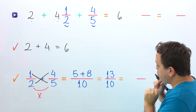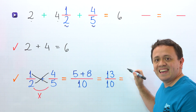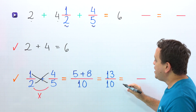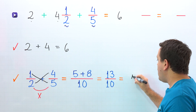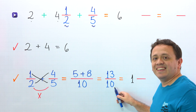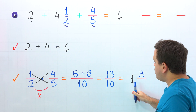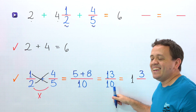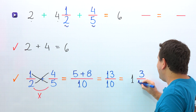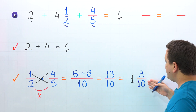Are you ready? Pay attention to the following question: how many times does 10 go into 13? Well, 10 goes into 13 one time. Next, we multiply: 1 times 10 is 10. To get 13, we need to add 3. And then the denominator stays the same. The sum of the fractions is 1 and 3 tenths.